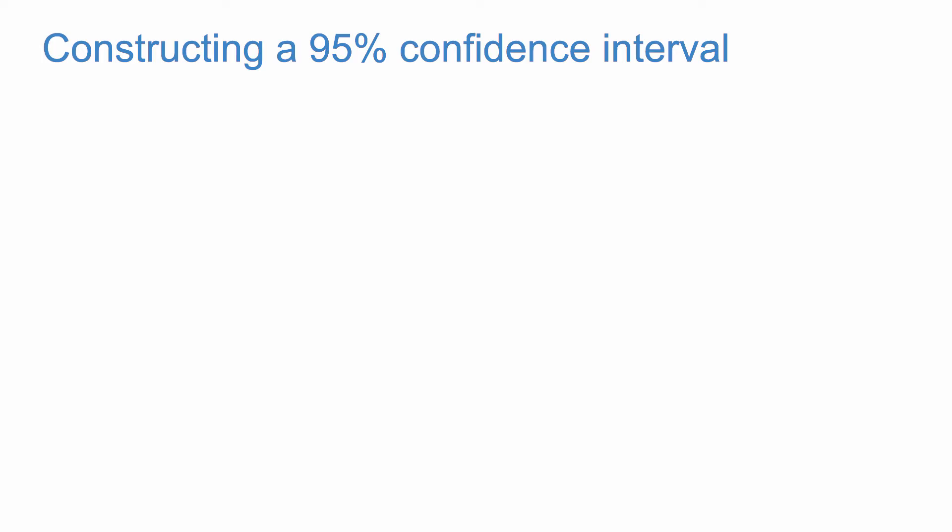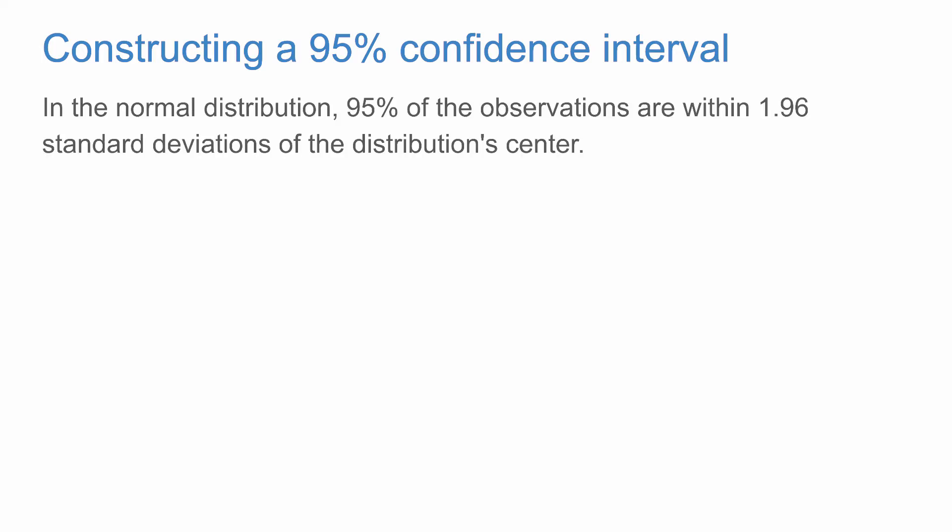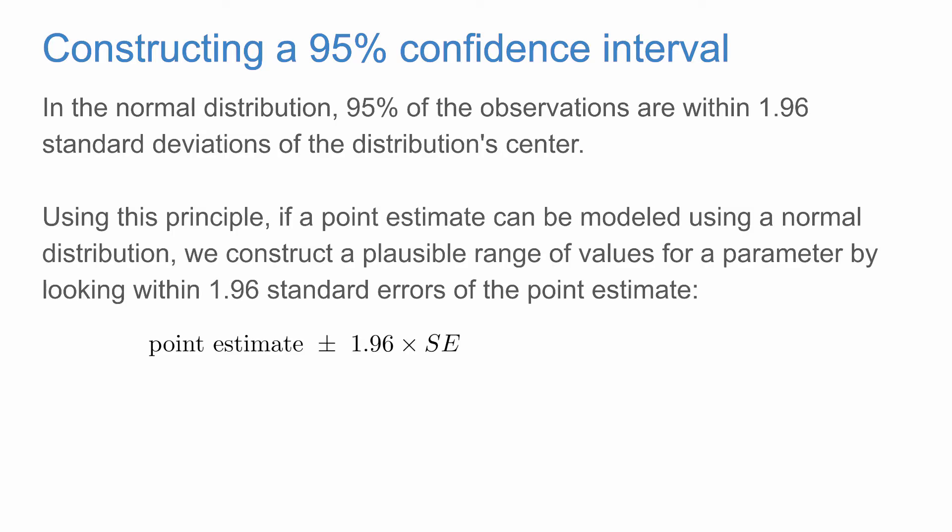Here we're going to talk about how to construct a 95% confidence interval. In the normal distribution, 95% of the observations are within 1.96 standard deviations of the distribution center. Using this principle, if a point estimate can be modeled using a normal distribution, we can construct a plausible range of values for a parameter by looking within 1.96 standard errors of the point estimate.